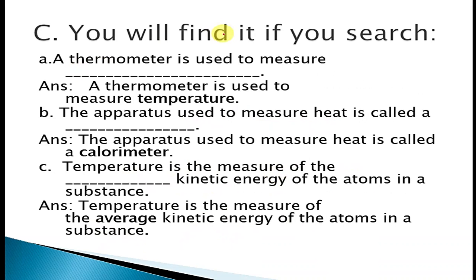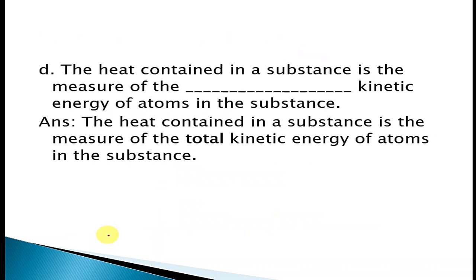Question C — fill in the blanks. A thermometer is used to measure temperature. The apparatus used to measure heat is called a calorimeter. Temperature is the measure of the average kinetic energy of atoms in a substance. The heat contained in a substance is the measure of the total kinetic energy of atoms in the substance.